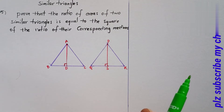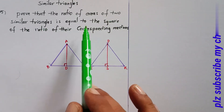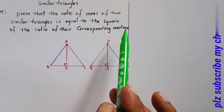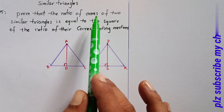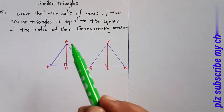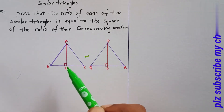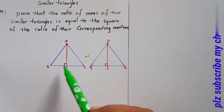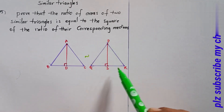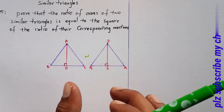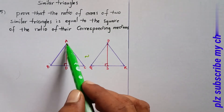Similar triangles, Exercise 8.3. Prove that the ratio of areas of two similar triangles equals the square of the ratio of their corresponding medians. Here are two similar triangles: triangle ABC and triangle PQR. We need to prove that the area of triangle ABC by area of triangle PQR equals the square of the ratio of their corresponding medians.